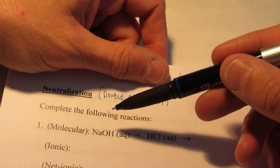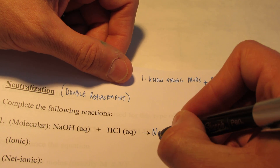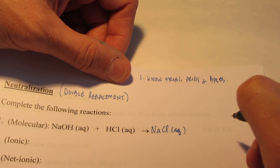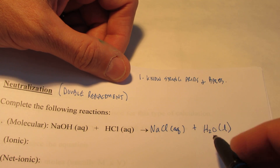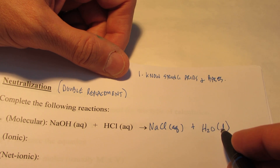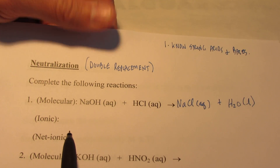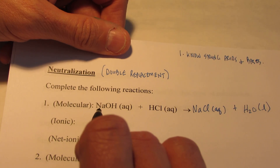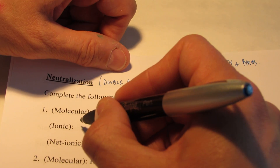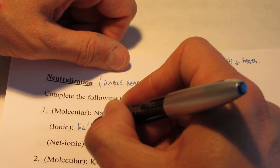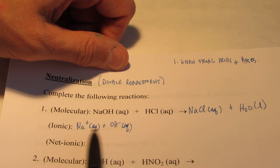Let's write the molecular equation for sodium hydroxide reacting with hydrochloric acid. Sodium's +1, chloride's −1, so we form NaCl, which is soluble in water. H and OH get together to form water — we'll put an (l) after that, since water sticks together as a liquid. Now ionically, we want to write them as they really are in water solution. Since sodium hydroxide is a group 1 hydroxide, it will dissociate 100% of the time, so I write it as Na+(aq) and OH−(aq).